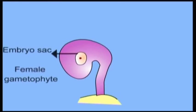This is haploid and is also called female gametophyte. At the time of fertilization, there will be a total of seven cells arranged in three groups in mature embryo sac.